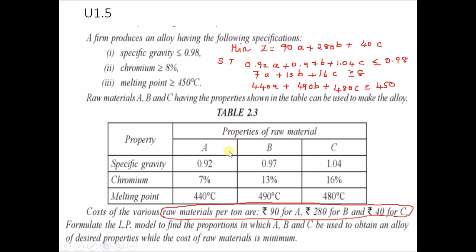To identify whether this is a maximization or minimization problem, the problem states at the end that the cost of raw material is to be minimized. That means the problem is a minimization problem. For a minimization problem you would normally get constraints of the greater-than-or-equal-to type. But since the constraint type is directly given in the problem, you can put that constraint type directly — for the first one it is less than or equal to.